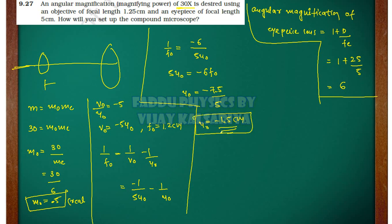So u0 will be 1.5 cm. And here you can find v0. How much will v0 be? Minus 5 into minus 1.5. So this will be 7.5. So where do we get the image from here? 7.5 cm.